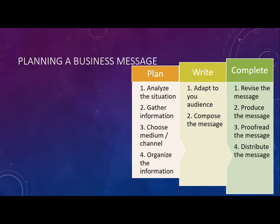Adapting to the audience is very important, as is how to compose the message — what words to use, what sentence structure to use. The third step is completing the message, which gives final touches. Inside completion: first, revise the message — go through it again, proofread it, edit it, rewrite it to be as concise and clear as possible. Then produce the message, proofread it, and finally distribute it to the intended audience.